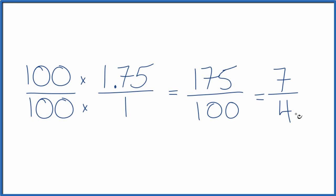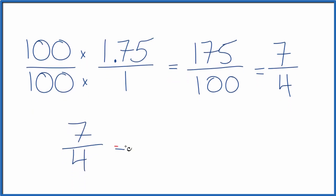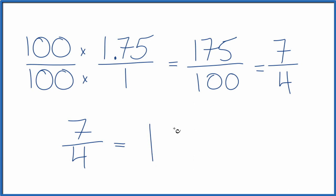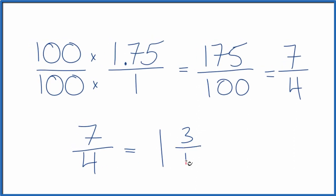This is an improper fraction again, because the numerator is larger than the denominator. So let's convert 7 fourths to a mixed number. 4 goes into 7 one time with 3 left over. Bring the denominator across.